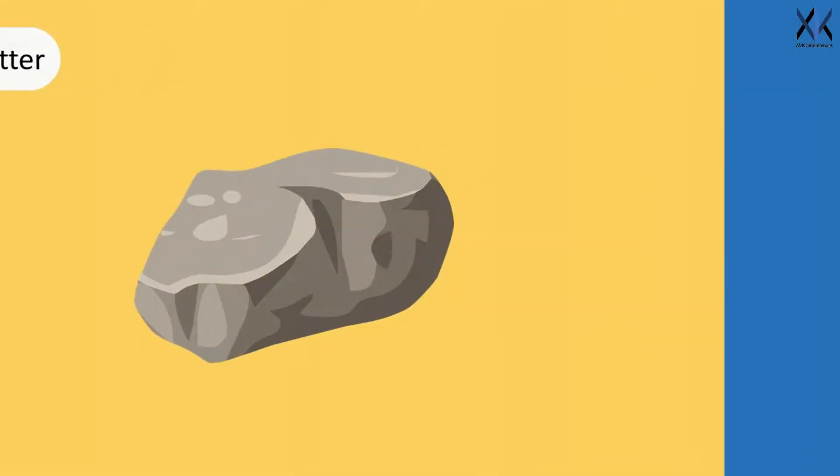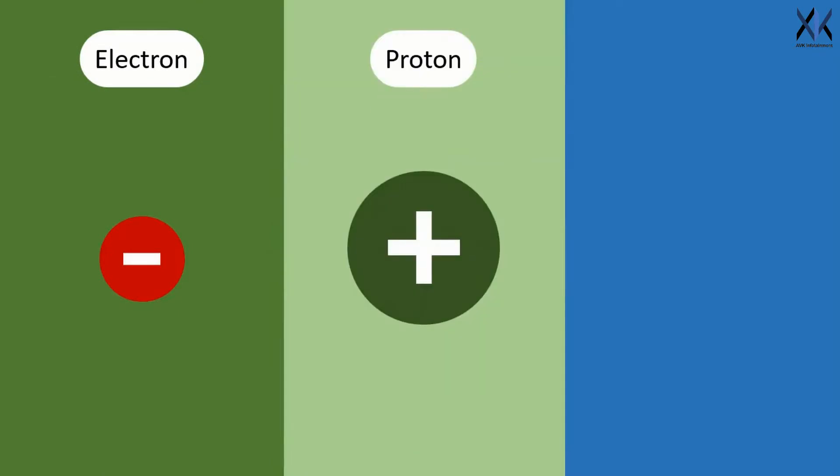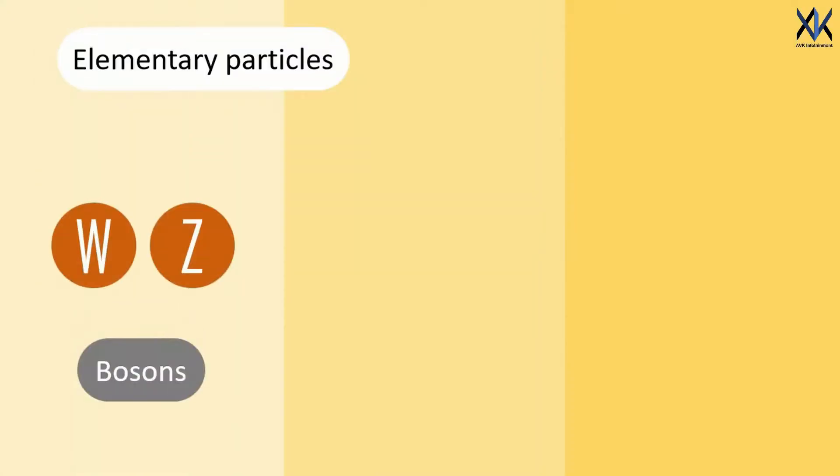Matter is made up of atoms, and they consist of subatomic particles like electrons, protons, and neutrons. Further, we found out that protons and neutrons are made up of even smaller particles, called elementary particles.